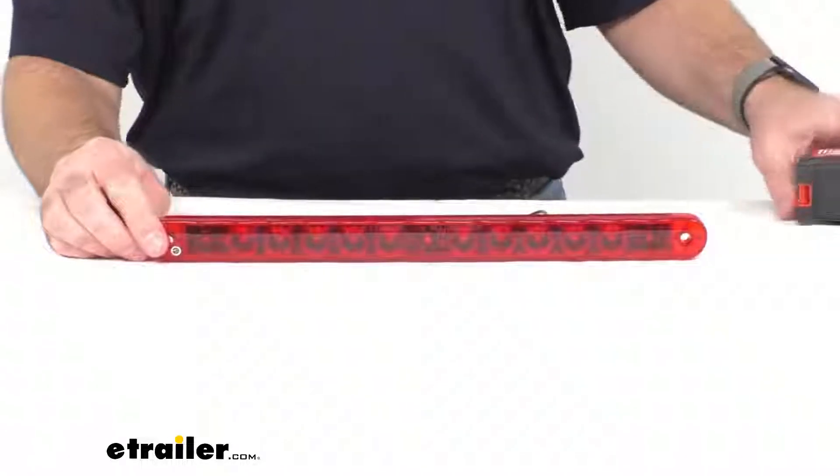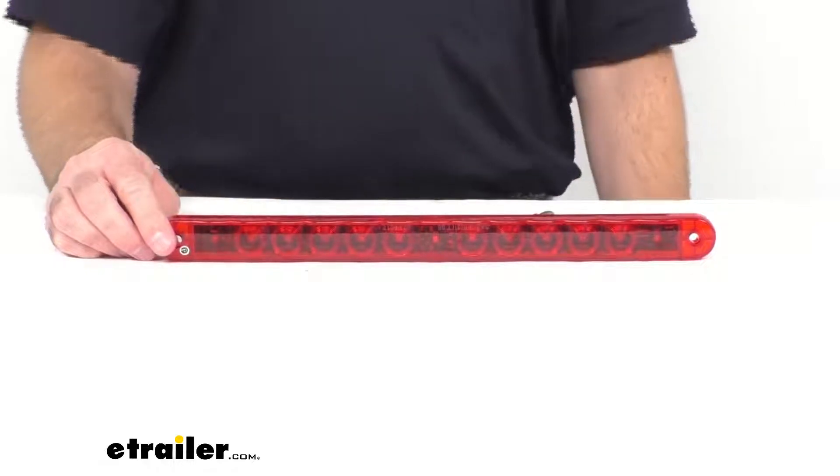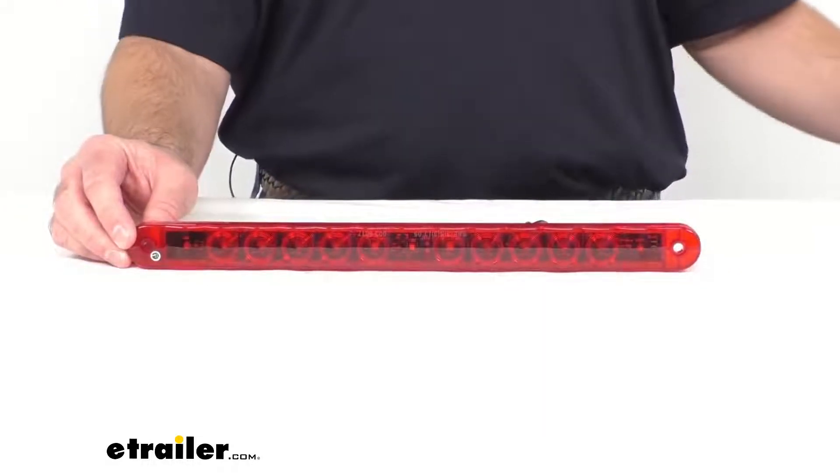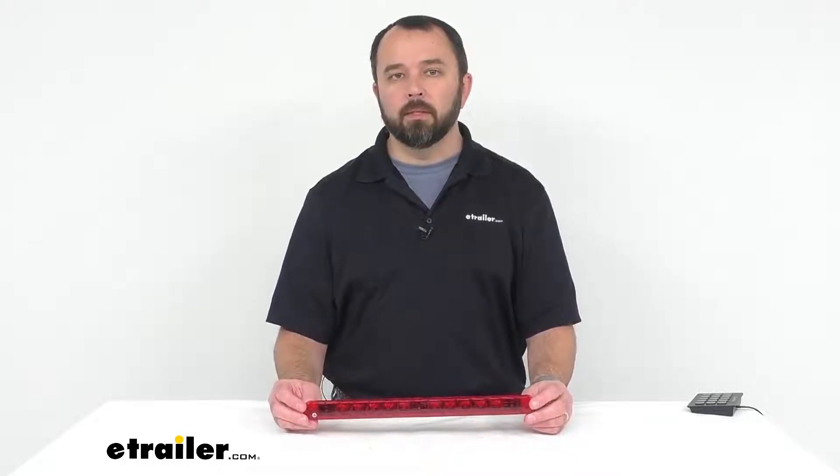Now this light does have 13 diodes, and the operating voltage is going to be 9 to 16 volts DC. This light is assembled in the United States of America, and it does have a one year limited warranty.